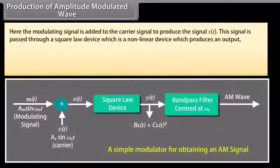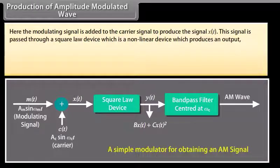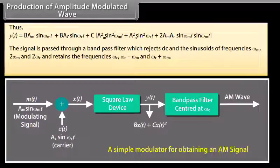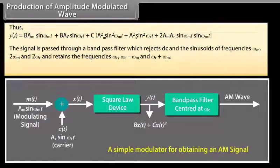Production of amplitude modulated wave. The modulating signal is added to the carrier signal to produce the signal x(t). This signal is passed through a square law device, which is a non-linear device that produces an output: y(t) = Bx(t) + Cx²(t), where B and C are constants. The signal is then passed through a band-pass filter which rejects DC and sinusoids of frequencies ω_M, 2ω_M, and 2ω_C.